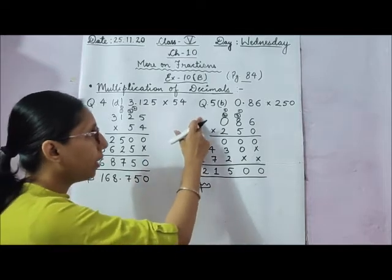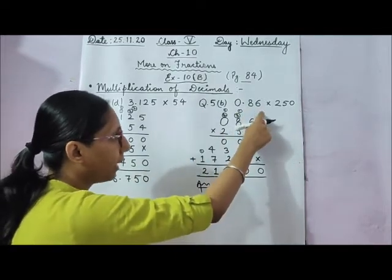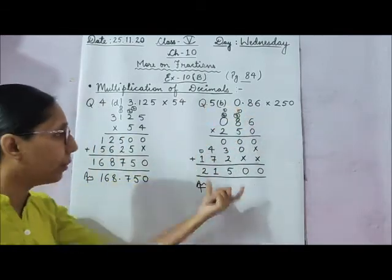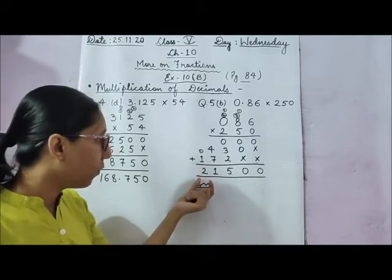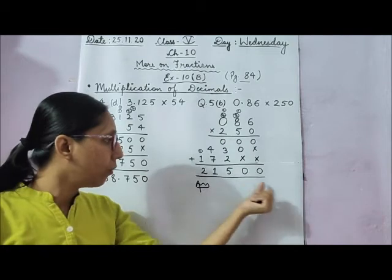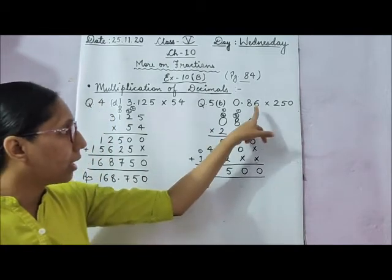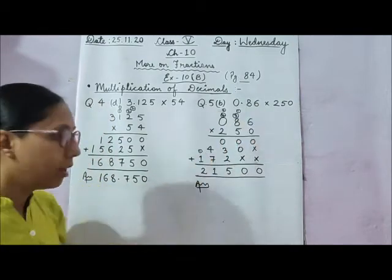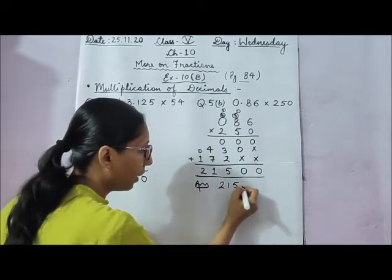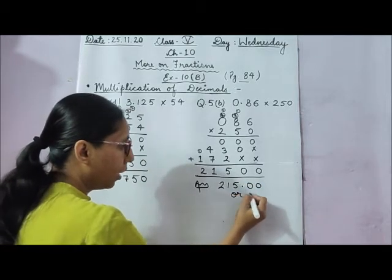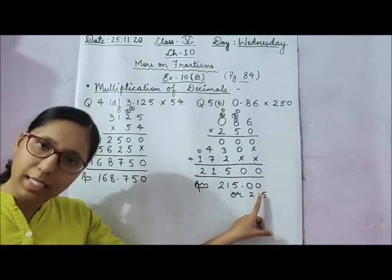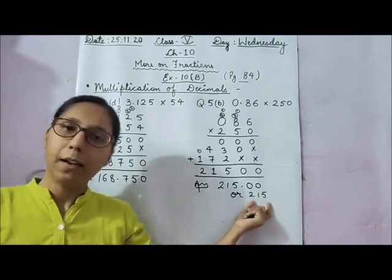Now question number 5, part b: 0.86 multiplied by 250. Again, we remove the decimal point and multiply normally. We get 21500. When the multiplication is done, we place the decimal point: there are 2 digits after the decimal point in 0.86, so we count 2 digits from the right and place the point, giving 215.00. Or we can simply write it as 215, since the digits after the point are zeros.